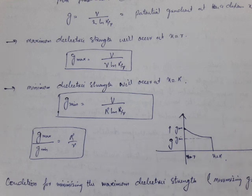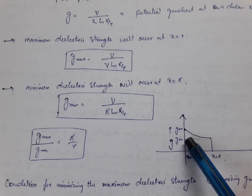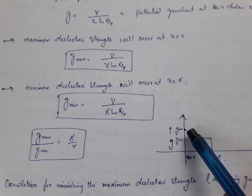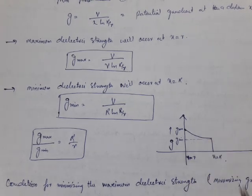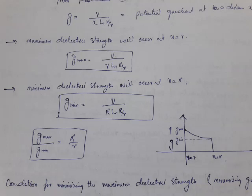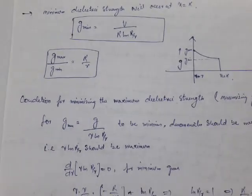The minimum stress is acceptable, but we want the maximum electrical stress to be minimized, so that this point comes closer to the minimum value and the curve flattens. Overall, we want the potential distribution to remain uniform throughout the dielectric, so that the problem of uneven distribution is eliminated.